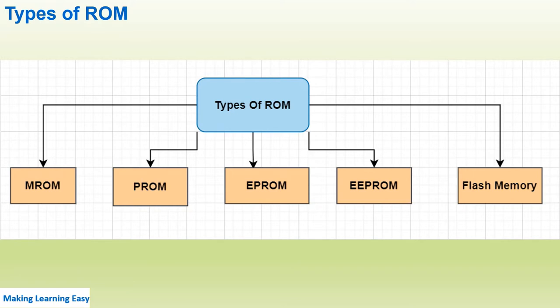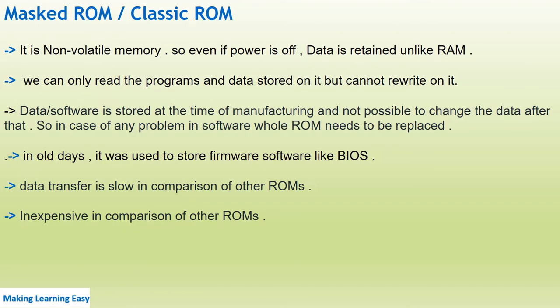Now let's see Mask ROM, or Classic ROM. It is the first type of ROM which was manufactured. It is non-volatile memory — you can only read the data or programs stored on it, but we cannot rewrite the data. The software or data is stored at the time of manufacturing.